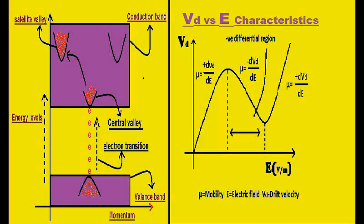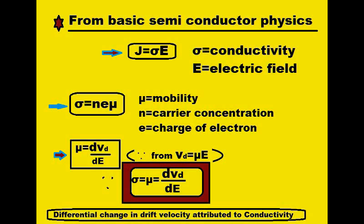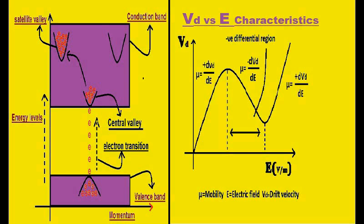From basic semiconductor physics, current density J = σE, where σ is conductivity and σ = neμ (n is carrier concentration, e is electron charge, μ is mobility). Since mobility μ = dVD/dE, conductivity σ is directly tied to this differential change. So as drift velocity first increases then decreases with electric field, conductivity also increases and decreases — this behavior occurs within a single n-type gallium arsenide crystal.